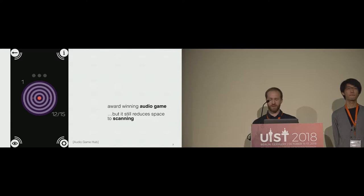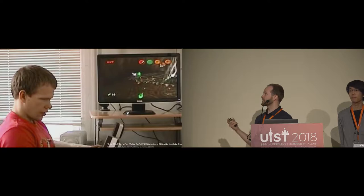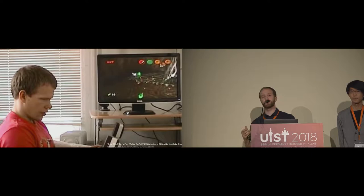But it still reduces space to scanning. Users have to wait for that target to cross the entire space. So what happens when we actually use spatial interaction? This is Terry — he's a YouTuber, and on his channel he's playing through The Legend of Zelda: Ocarina of Time. He's also blind.